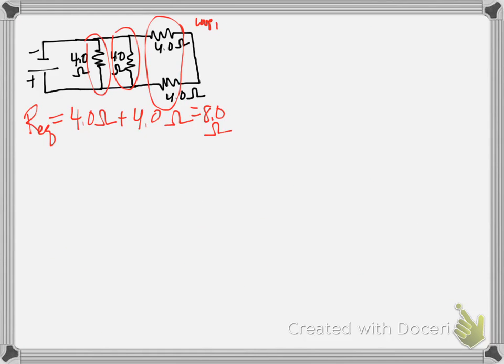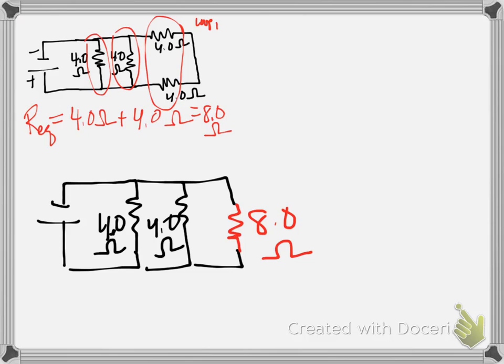Okay, so now that we've figured out the equivalent resistance of that back loop of the circuit, we're actually going to redraw the circuit. And we're going to redraw it with our new equivalent in there. All right, so I've redrawn the circuit, and I've replaced those two that were in series with one another with one equivalent resistance.